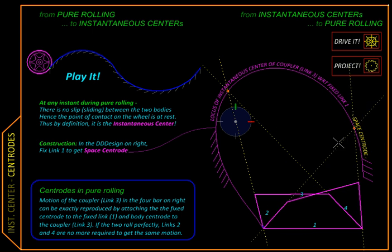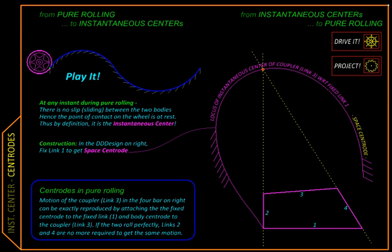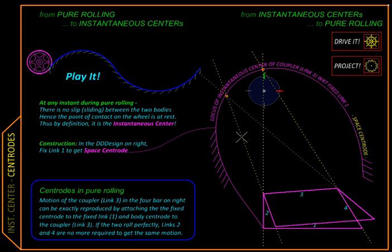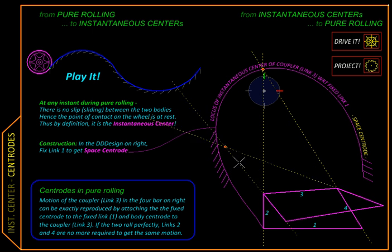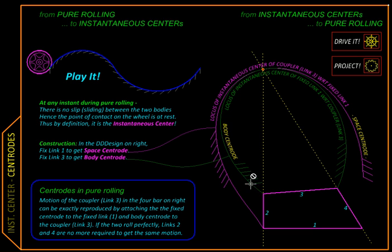Let us now repeat the same exercise, but this time we are going to place ourselves on link 3, so that will appear fixed and link 1 will appear to be rotating about this instantaneous center i13. Its path this time would be slightly different. The point of intersection, you can see, is not following the space centroid but a different path. Let us connect all these positions and we will get what is called the body centroid or the moving centroid, because it is observed from the moving body.